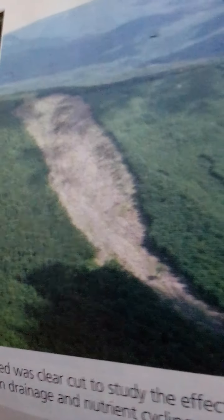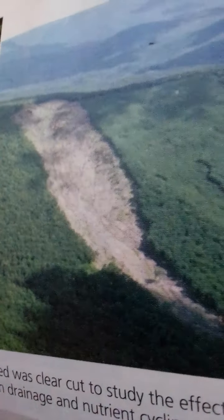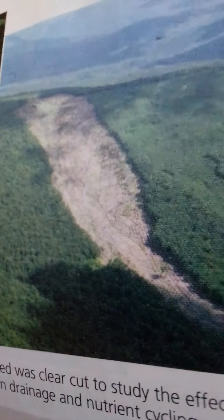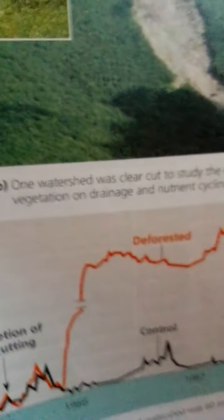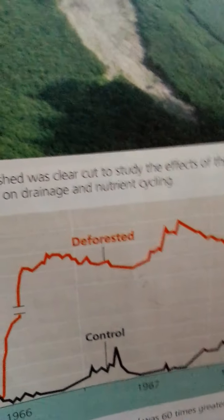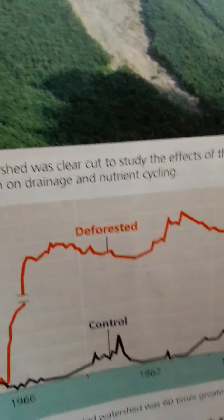For example, only about 0.3 percent more calcium (Ca²⁺) left a valley via its creek than was added by rainwater, and this small net loss was probably replaced by chemical decomposition of bedrock. During most years, the forest actually registered a small net gain of a few mineral nutrients, including nitrogen.